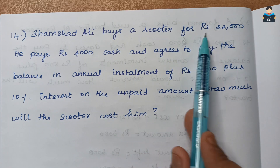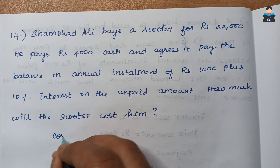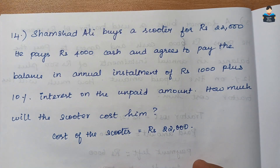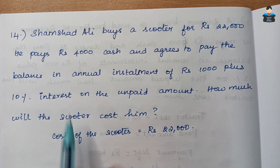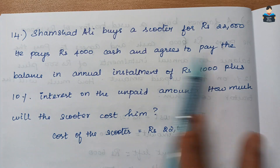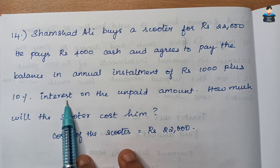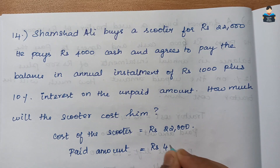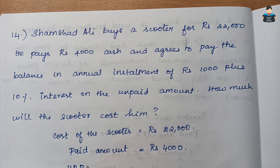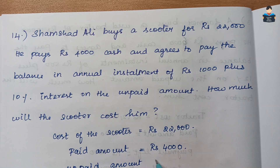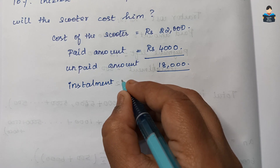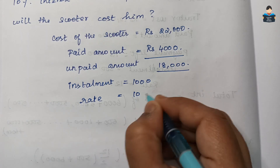Question number 14: Shamshad Ali buys a scooter for rupees 22,000. He pays rupees 4,000 cash and agrees to pay the balance in annual installments of rupees 1,000 plus 10% interest on the unpaid amount. Paid amount = rupees 4,000, so unpaid amount = 22,000 − 4,000 = rupees 18,000.